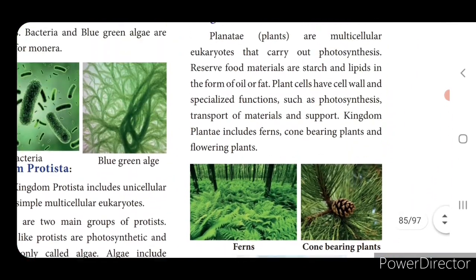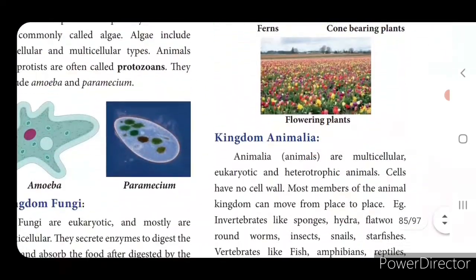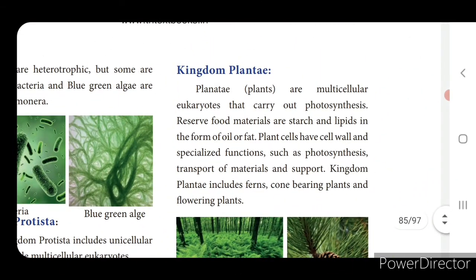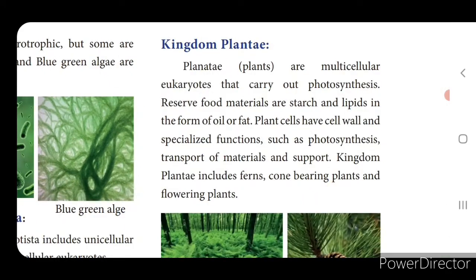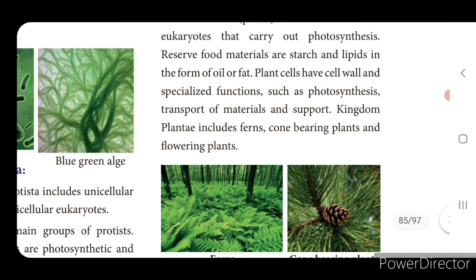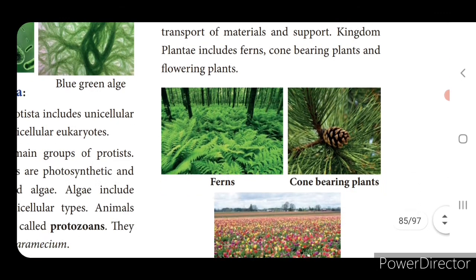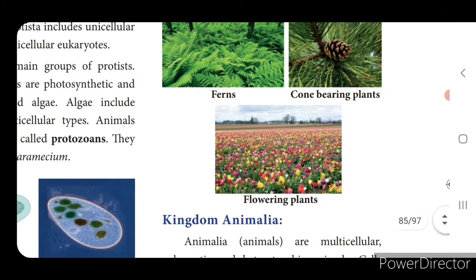Kingdom Plantae - plants are multicellular eukaryotes that carry out photosynthesis. Reserved food materials are starch and lipids in the form of oil or fat. Plant cells have cell wall and specialized functions such as photosynthesis, transport of materials and support. Kingdom Plantae includes ferns, cone-bearing plants and flowering plants.